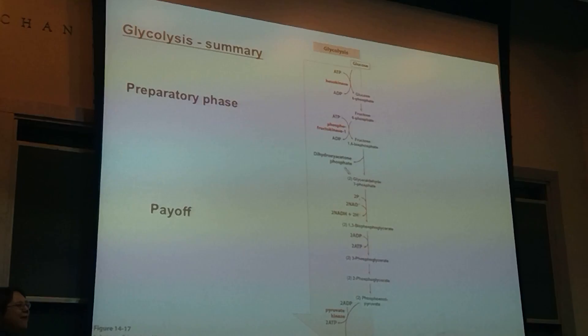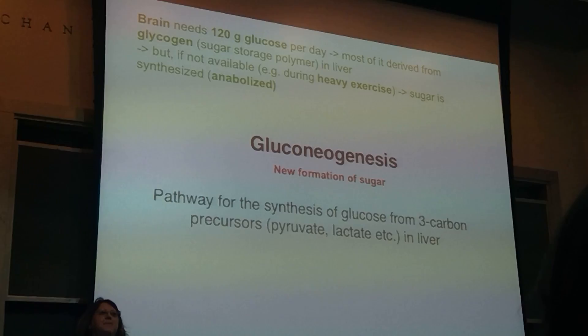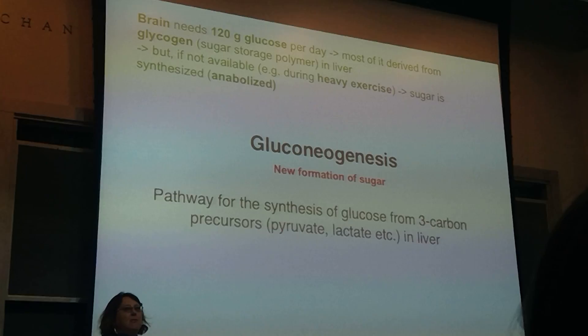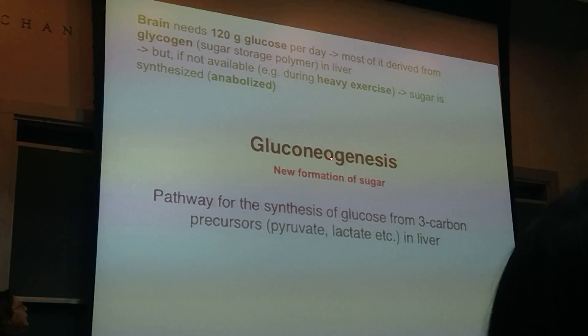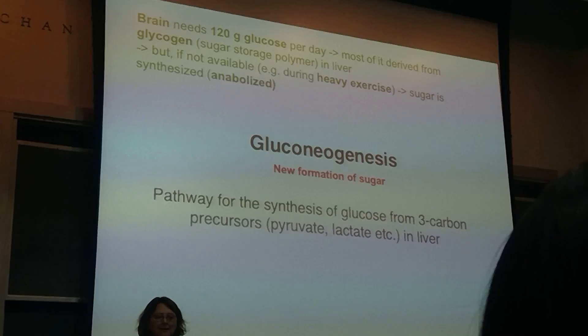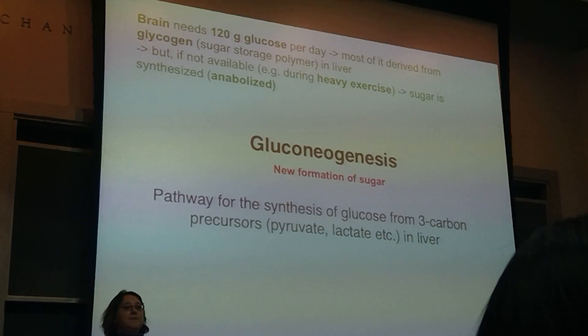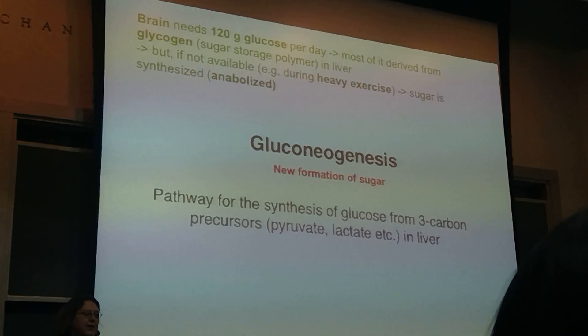When we want to look at gluconeogenesis, we're going to compare this in a minute. Gluconeogenesis is the opposite — we're actually making glucose. Thinking about the derivation of the word: gluco means sugar, neo means new, genesis means formation — the new formation of sugar or the synthesis of glucose. We already saw from PET imaging how much glucose is used by the brain — actually 120 grams of glucose per day. Most of it comes from glycogen where it's stored and can be readily used. But if you're exercising really rapidly, you're using up all your glycogen storage and you actually need to be synthesizing some for your brain.